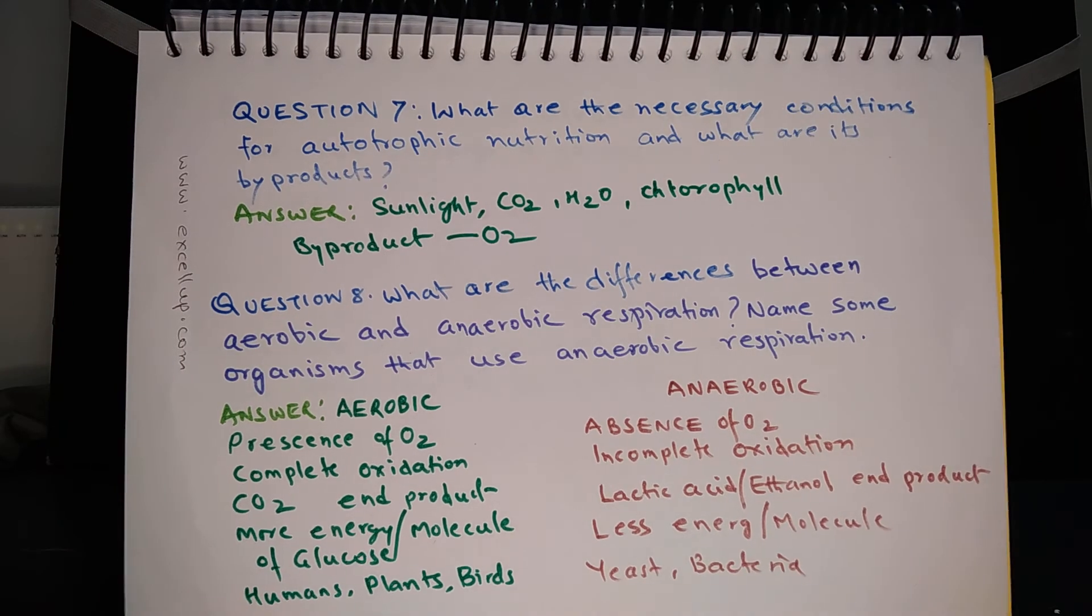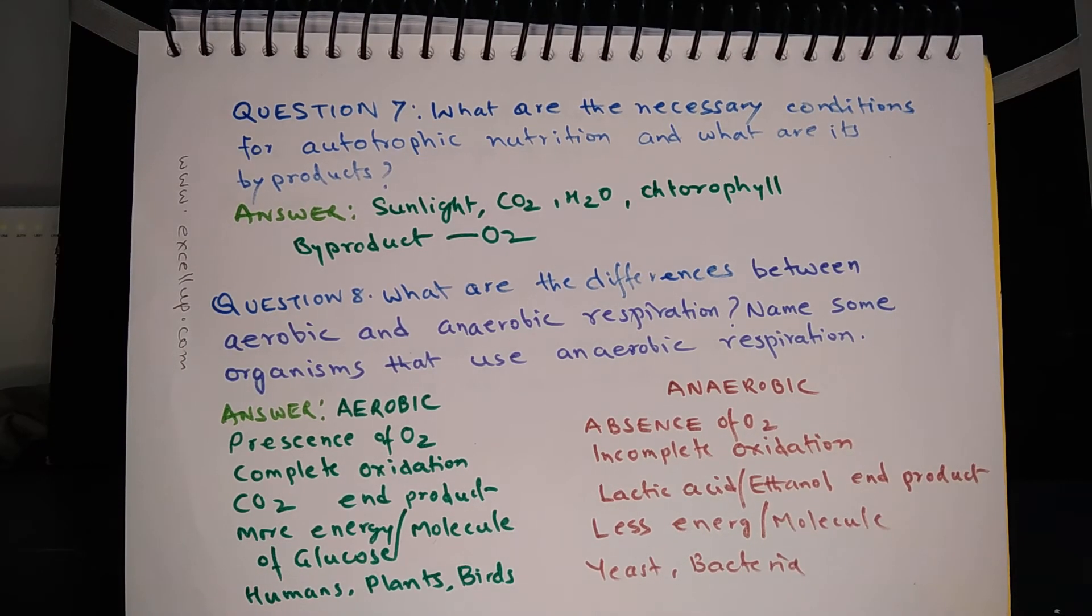Question 7: What are the necessary conditions for autotrophic nutrition and what are its byproducts? So necessary conditions were in the multiple choice question: sunlight, carbon dioxide, water, and chlorophyll. These are the necessary factors or conditions for photosynthesis to take place, and the byproduct is oxygen which is given out through stomata.